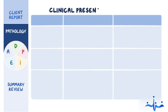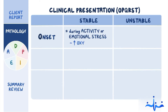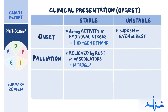The clinical presentation helps to differentiate stable and unstable angina using the acronym OPQRST. O stands for onset, which for stable angina is during activity or emotional stress due to increased oxygen demand, whereas for unstable angina, onset can be sudden or even at rest. P is for palliation — stable angina is relieved by rest or vasodilators like nitroglycerin, whereas unstable angina is not relieved.